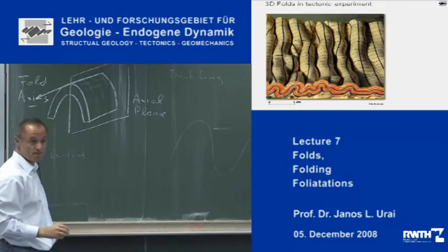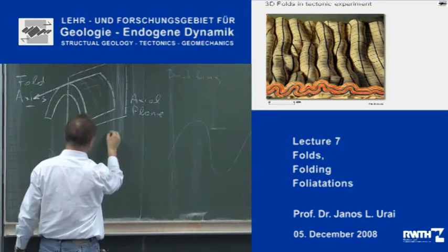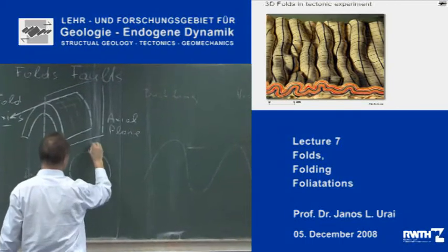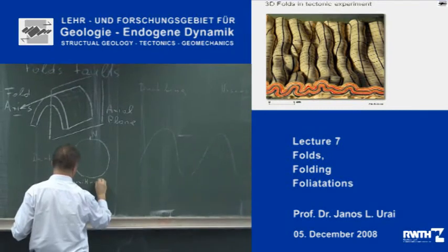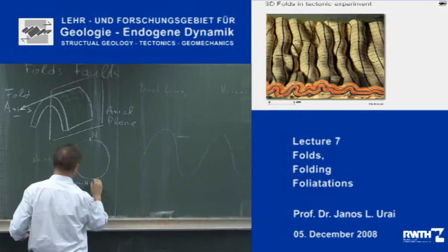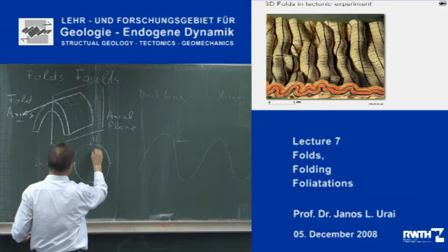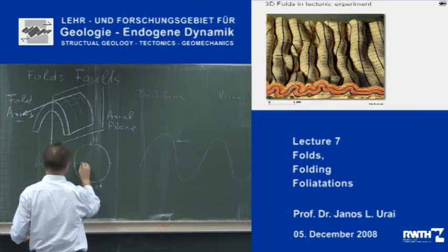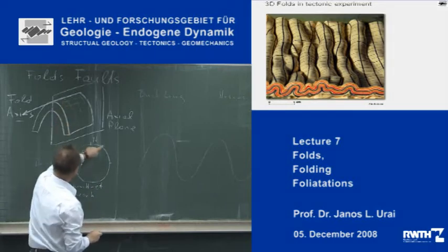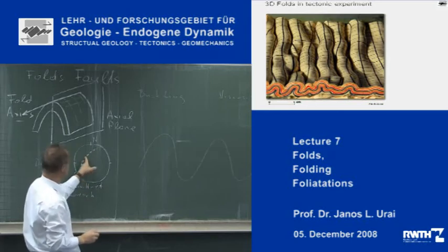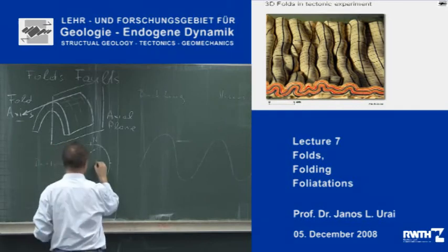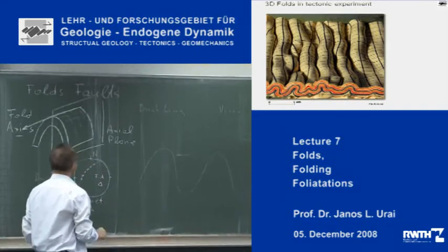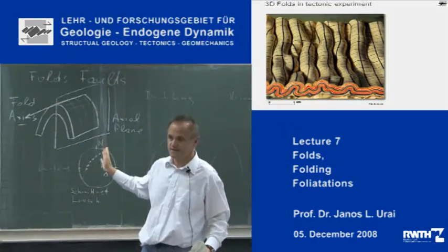Very simply, in a stereogram — this is the Schmidt net, lower hemisphere — if you measure the elements of a fold, you get measurements of planes that all lie on a great circle. If you take the pole of this great circle, that gives you the fold axis. You must understand this, otherwise you cannot talk about folds. The axial planes of these folds, and also the fold axis, are in fact curved — they are not completely straight.